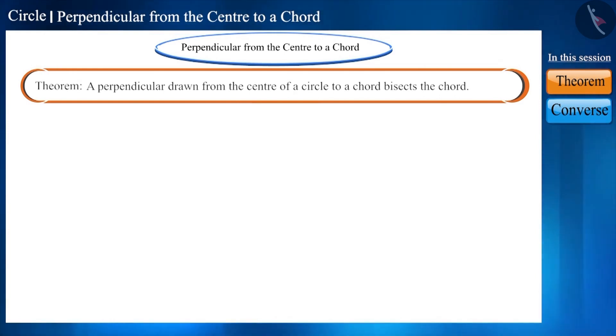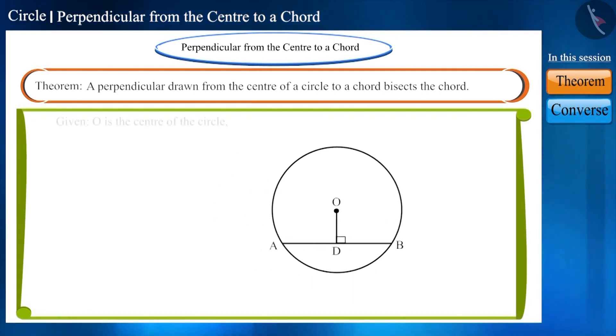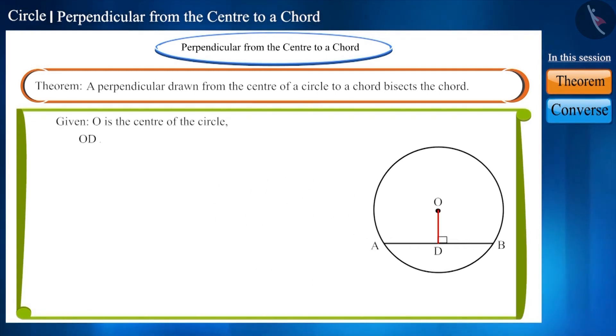Come on, let's prove it mathematically. With the help of the statement, draw a figure. We are given that OD is perpendicular to chord AB and we have to prove that line segments AD and BD are equal.